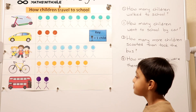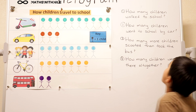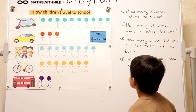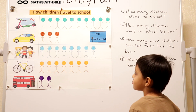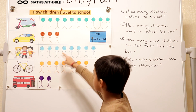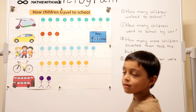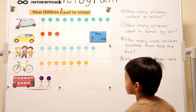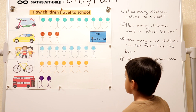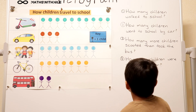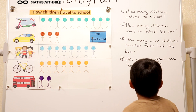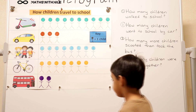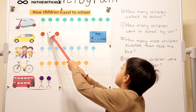Let's have a look at the questions on the right hand side. What does the first one say? How many children walk to school? Can you use the point and count? One, two, three. Very good.